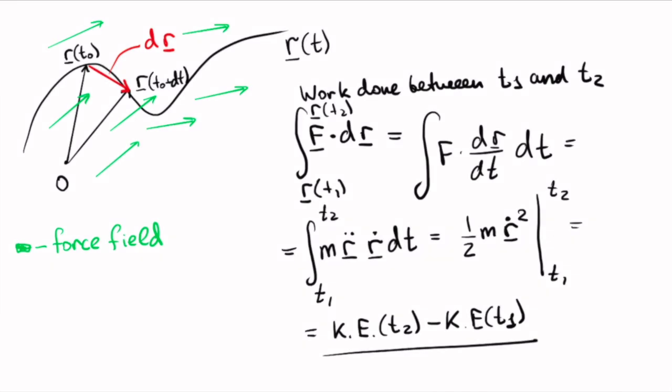But, more importantly, we see that work done is equal to the change in kinetic energy. And this is how kinetic energy, or half mv squared, became important in modern physics.